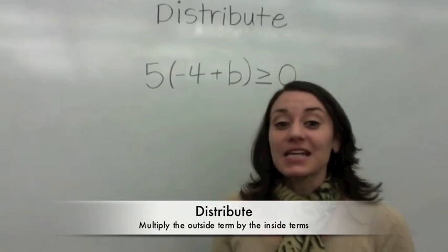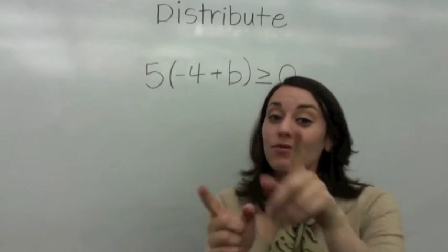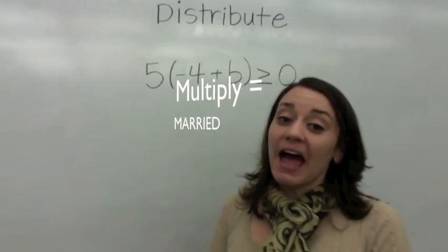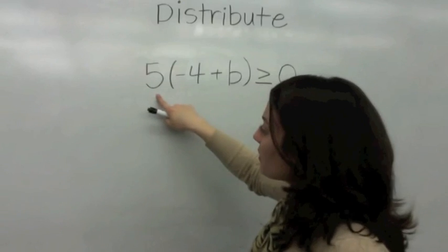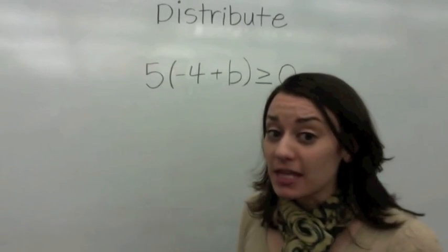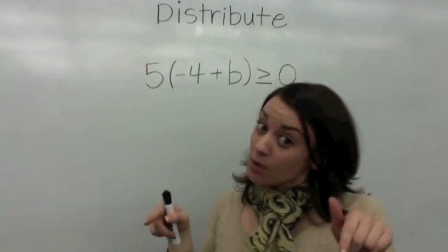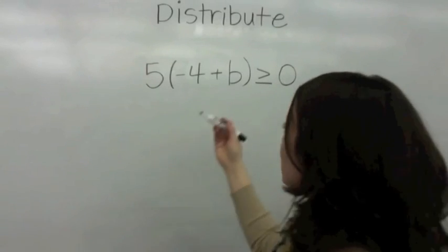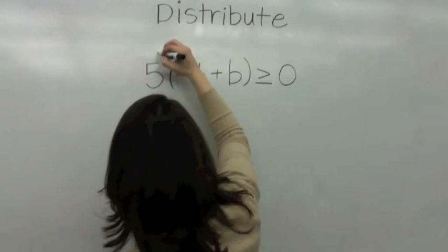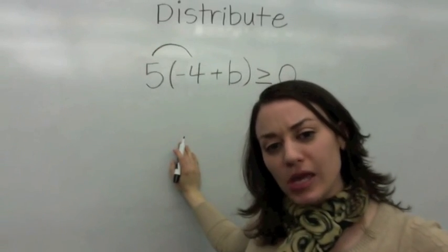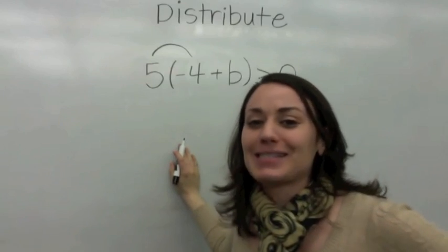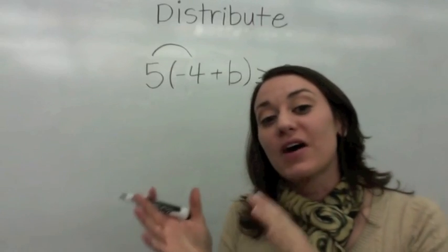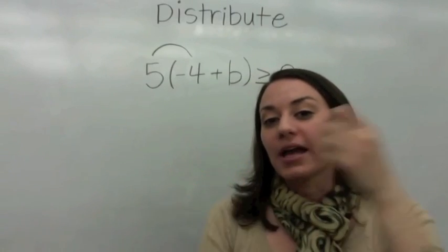Distribute means that you are going to multiply. And remember, multiply is the same thing as married. So here we have Mr. 5. If you see Mr. 5 and he's outside the parentheses, he wants to get with the people that are inside the parentheses. So first, he wonders if he can get with Miss negative 4. He says, baby, will you get with me? And Miss negative 4 says, okay, I will. So you have to ask yourself, what is 5 multiplied by negative 4?